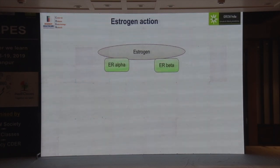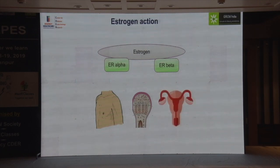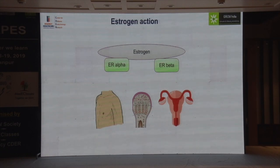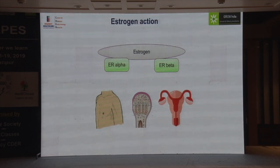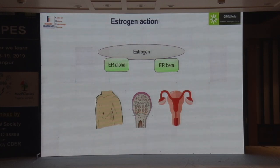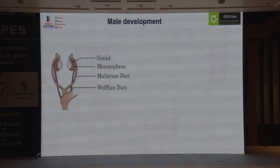Estrogen action happens via ER-alpha and ER-beta, acting on breast development, bone maturation, and uterine growth. Importantly, estrogen levels at birth are essentially undetectable — ovaries do not produce estrogen by 36 weeks of gestation. Even with zero estrogen, the female phenotype will develop. There may be transplacental passage and a single follicle at birth, but ovarian estrogen production is absent during fetal life.